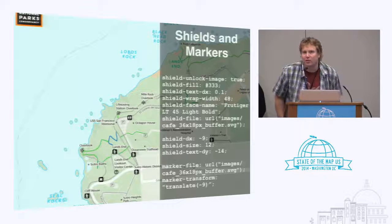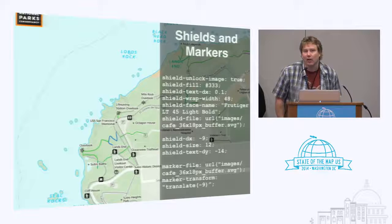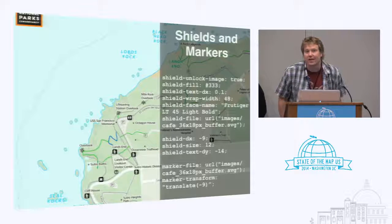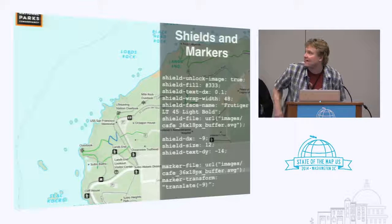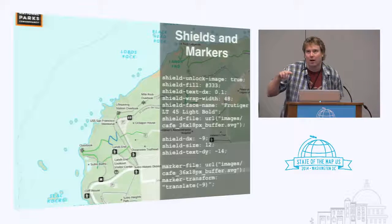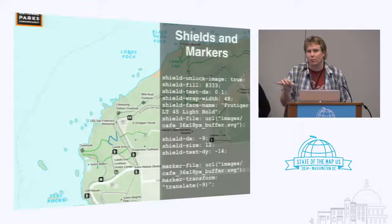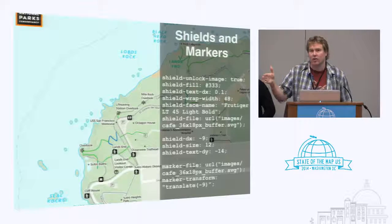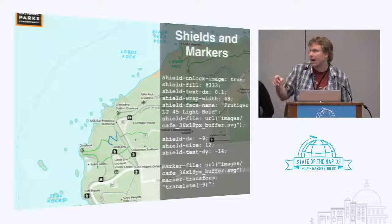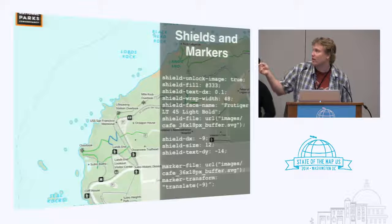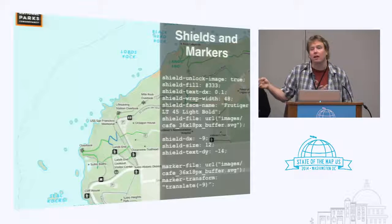The astute viewer will notice that the double-wide icons will result in both the label and the icon being offset from the actual point. That's what the magic negative nine is for. It's an 18 by 18 pixel icon, but 36 units wide, so it needs to get shoved to the left by half the size of the icon in order to position it properly. That's where the shield-DX negative nine and the translate negative nine come in.